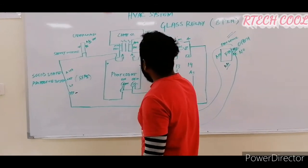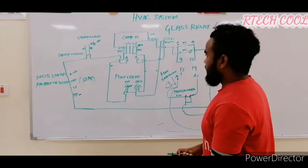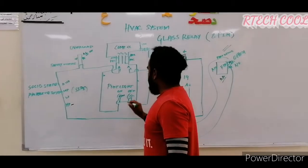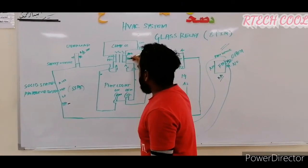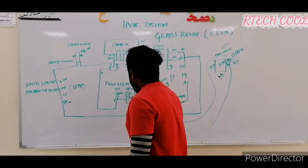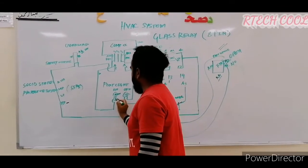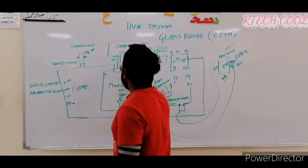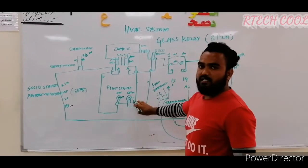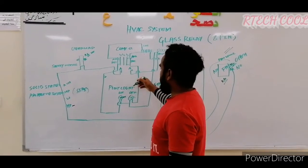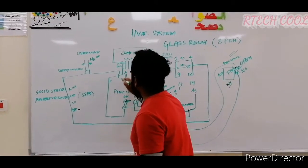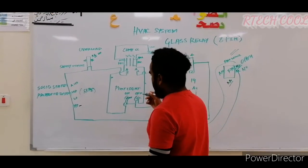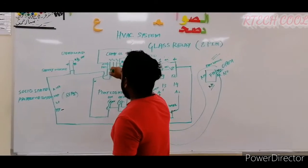From the NO we get one signal, and from the NC we get another — these go to the pilot lights in the control panel. In the control panel, we always see an on/off light showing compressor status. There is a red light and a green light. When the compressor starts and the contactor energizes, the NC opens — so the red light turns off — meaning the compressor is running. The NO closes, so the green light indicates the compressor is running. You can go to the control panel room or the AHU room and see the red light on means the compressor is running.